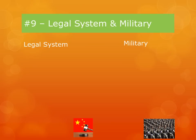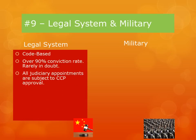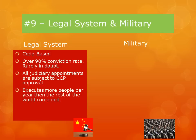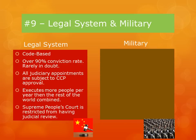Number nine is about the Chinese legal system and military. The legal system in China is code-based, and there is an over 90% conviction rate, as cases are never in doubt from beginning to end. All judiciary appointments have to be approved by the CCP, and China uses capital punishment more than any country in the world. The Supreme People's Court, the highest federal court of China, is restricted from having the power of judicial review and thus cannot get in the way of any decisions made by the executive or the NPC.